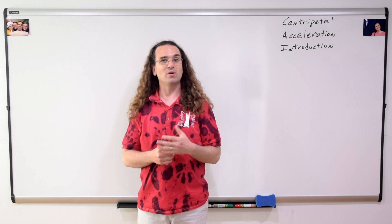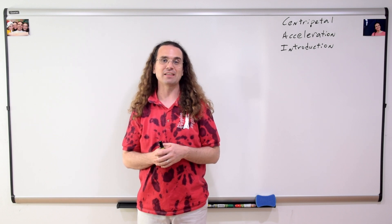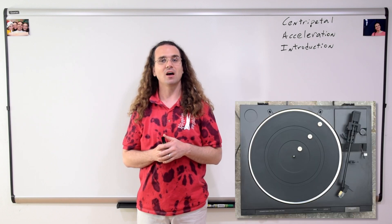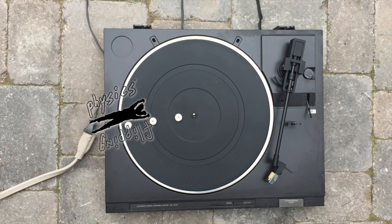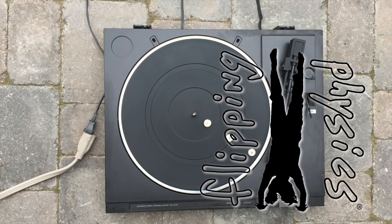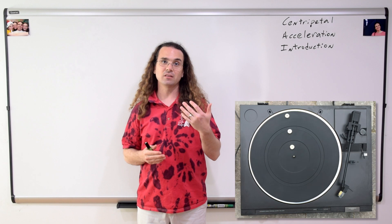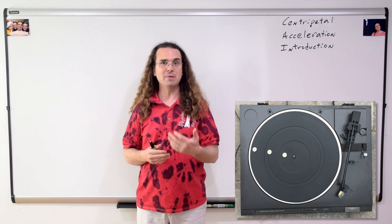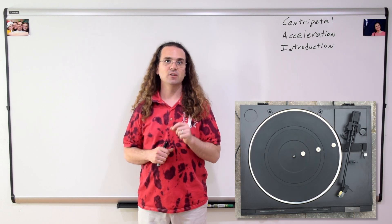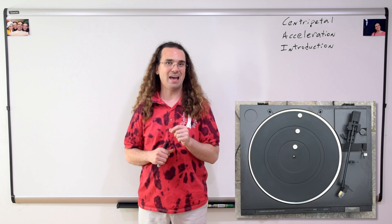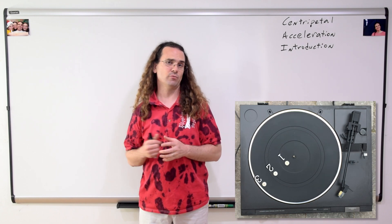Good morning. We are once again going to spend some time looking at three mints on a turntable. Let's label the three mints from smallest path radius to largest path radius: 1, 2, and 3.